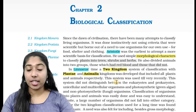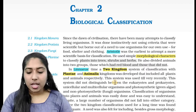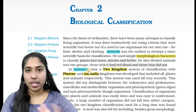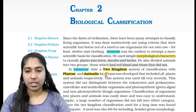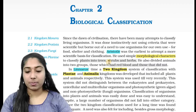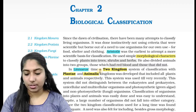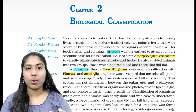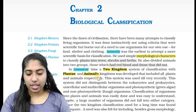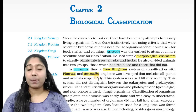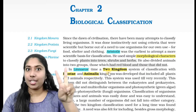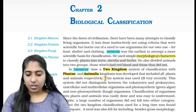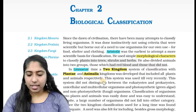Let's go to this text. In the first paragraph, we will read about the classifications — plants, herbs, trees, and red-blooded and non-red-blooded. We will classify the first paragraph. The second paragraph mentions the linear classification and two kingdom classification.